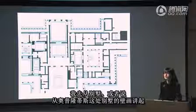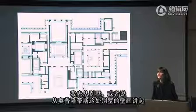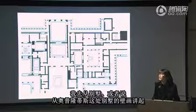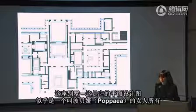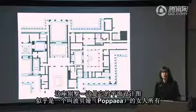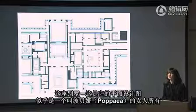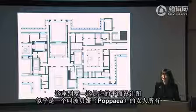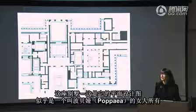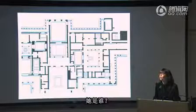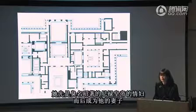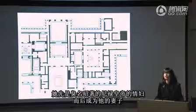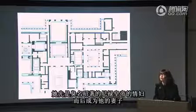I want to look first at the paintings at a villa at Oplontis. This villa, and you see a plan of it here, appears to have belonged to a woman by the name of Poppaea — P-O-P-P-A-E-A. Who was Poppaea? Poppaea was first the mistress and then the wife of Rome's notorious emperor Nero.